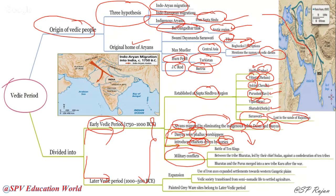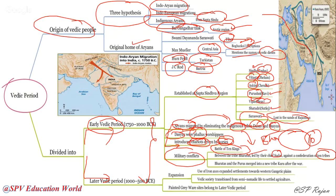During the Early Vedic age, there were military conflicts — the Battle of Ten Kings. It was during the Early Vedic age, between the Bharatas led by chief Sudas against a confederation of ten tribes. These ten tribes were indigenous persons; the Bharatas were Aryans. After this battle, Bharatas and Purus merged into one single tribe known as the Kuru tribe.